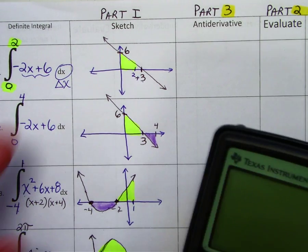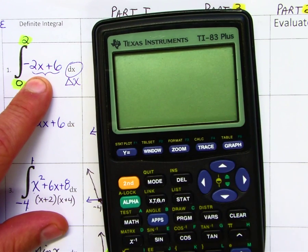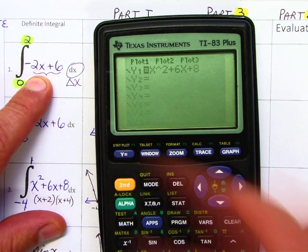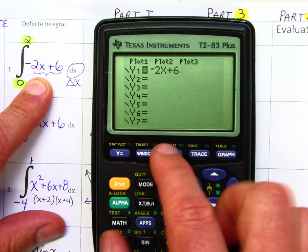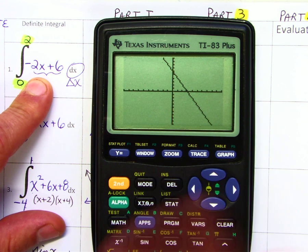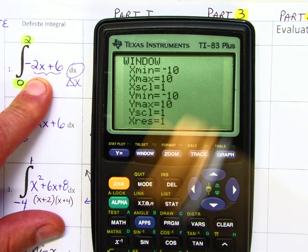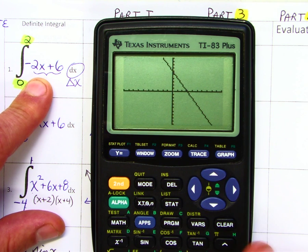So first thing you're going to do is you're going to input the original function into your graphing calculator. So let's see, you're negative 2x plus 6, and if you want a standard window, you can go to zoom 6, and that will give you what's called a standard window.